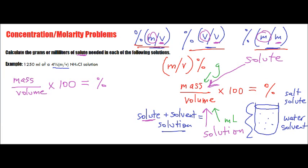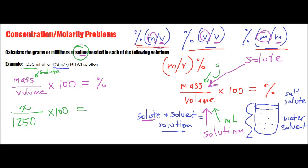The mass is that of the solute. The question says calculate the grams or milliliters of a solute, so that's what we're trying to find. We've got a volume of 1,250 milliliters, and we don't know what the mass is — that's what we're trying to find, so that's going to be our x value. It's being divided by our volume, which is 1,250. If we had this number x, we would typically multiply it by 100, and it would give us a percent — but that percent is already given to us: the 4%.